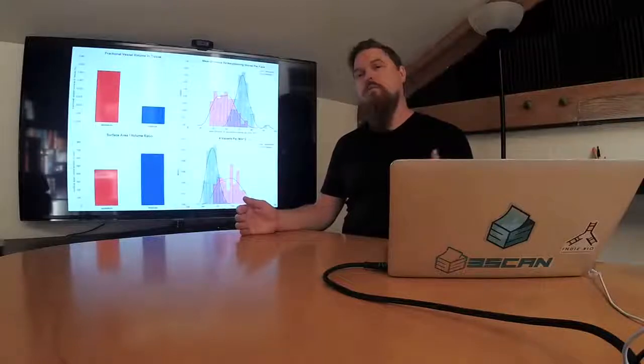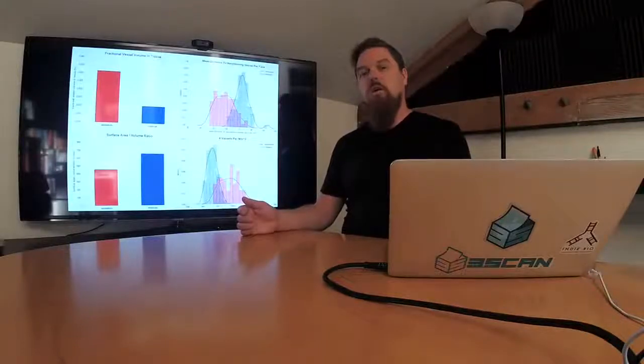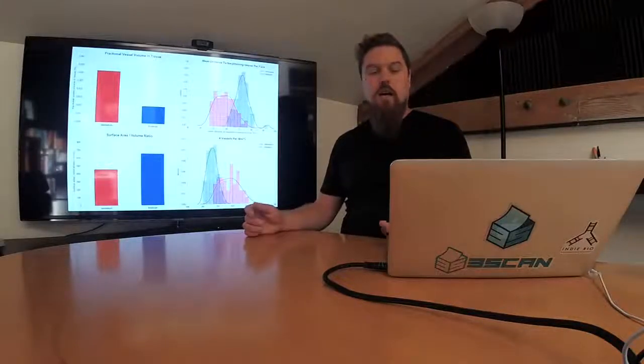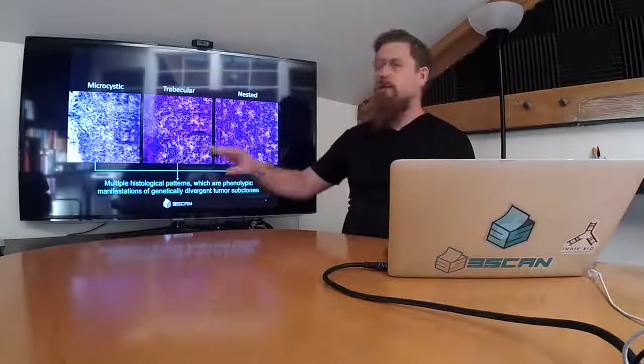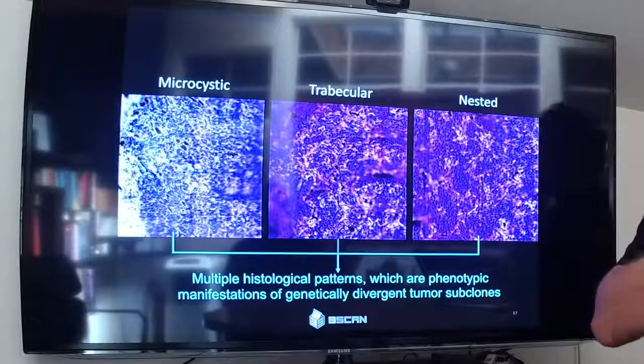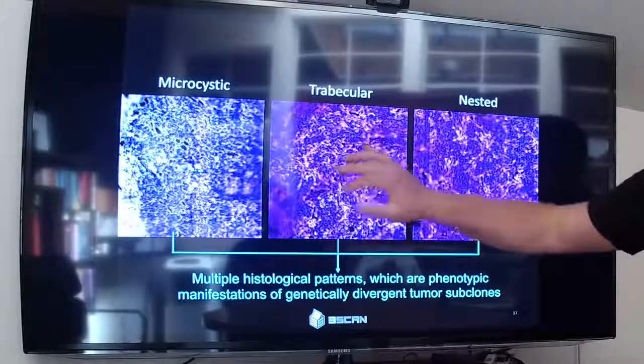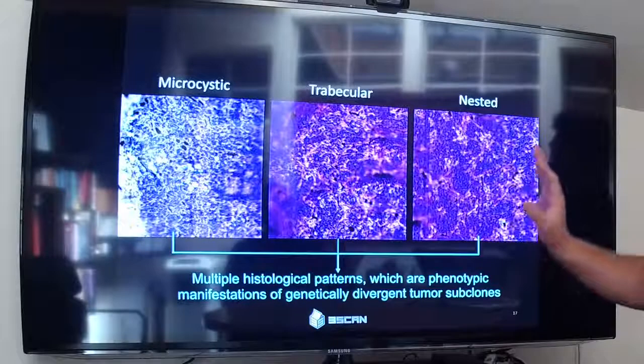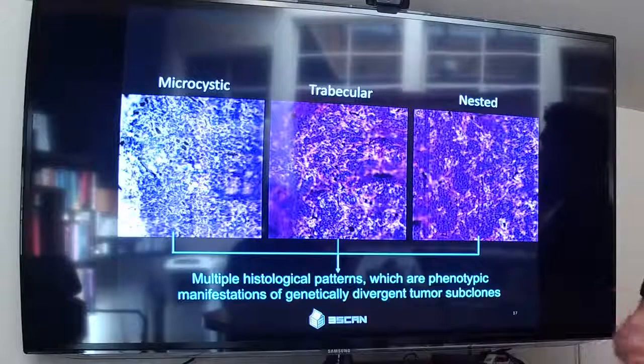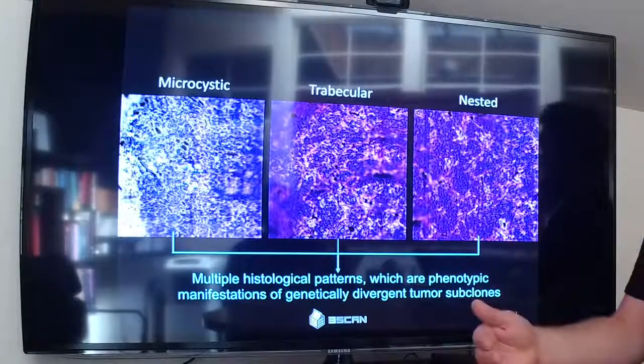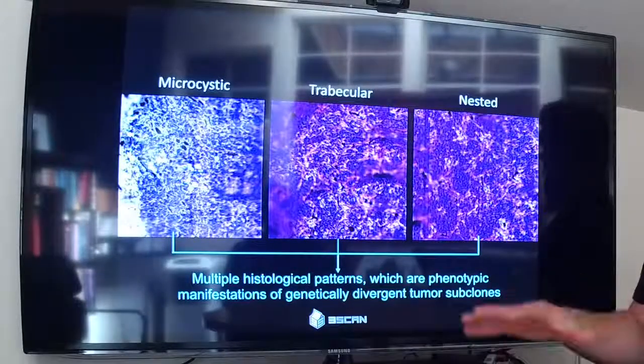Now we can look at more than just blood vessels. I tend to show those because most people have an intuitive sense of what blood vessels look like. We can also look at, say, different tumor architectures. So here are three different tumor architectures. This is microcystic, trabecular, nested. Underneath these different phenotypes, there are different genotypes that reflect different subclones of a tumor. So we can classify different architectures.